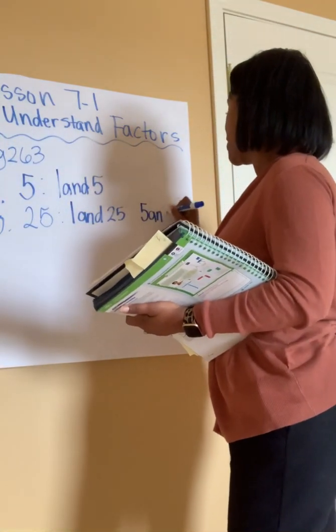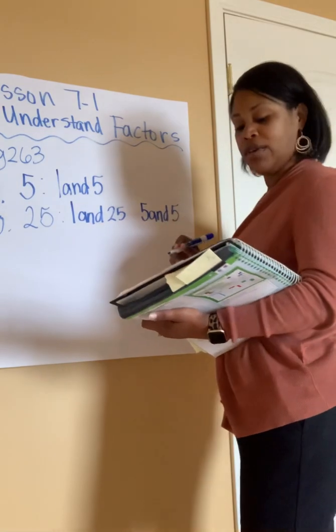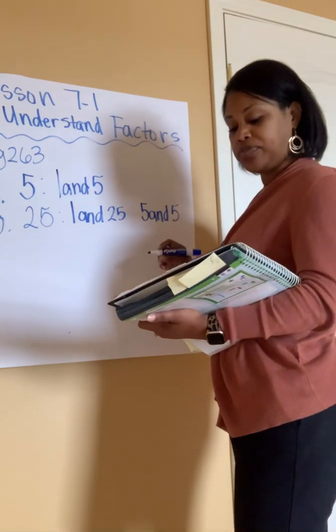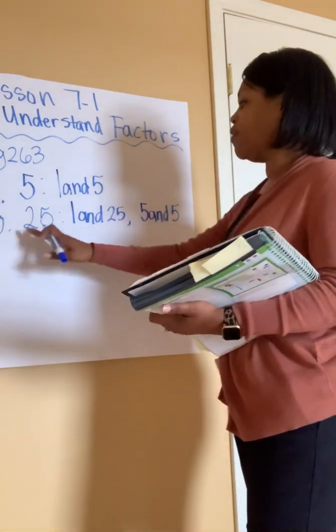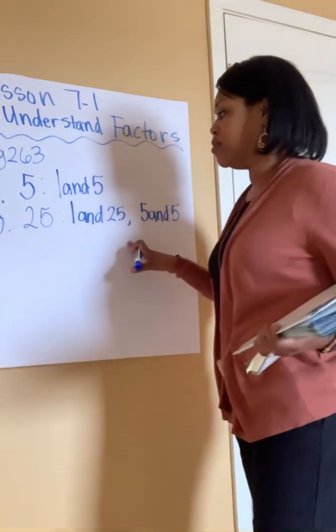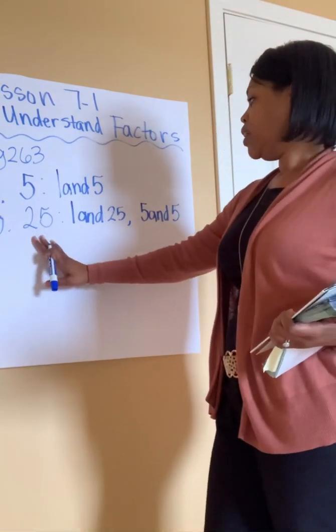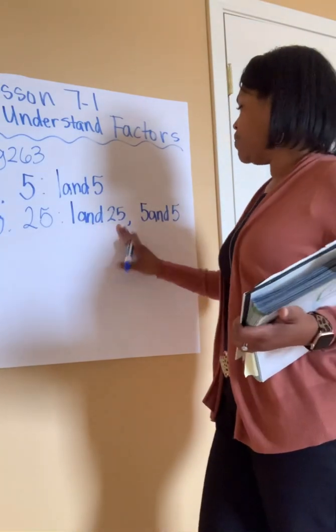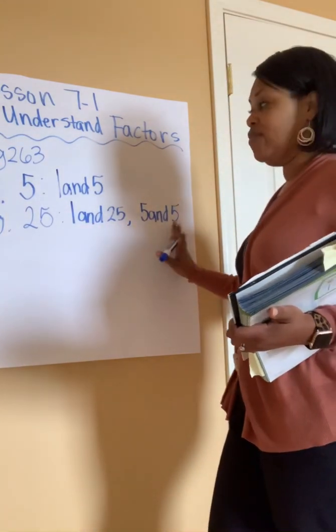5 and 5. So the factor pairs for 25 are 1 and 25, and 5 and 5.